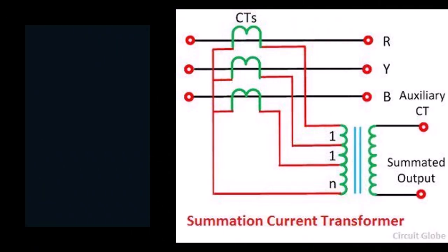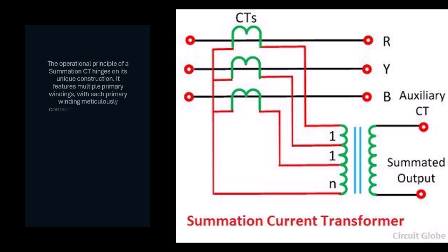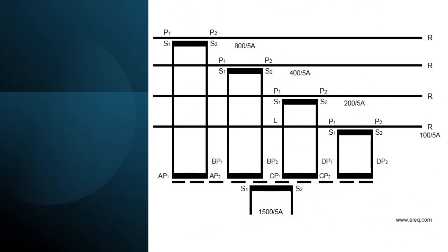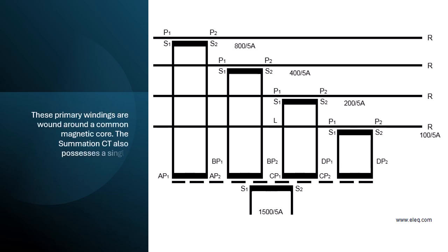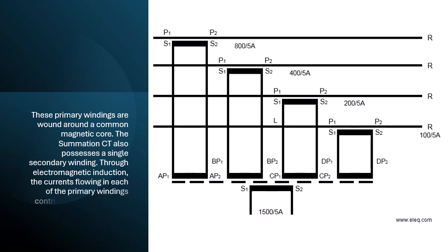The operational principle of a summation CT hinges on its unique construction. It features multiple primary windings, with each primary winding meticulously connected to the secondary output of a dedicated main CT monitoring a specific circuit or phase. These primary windings are wound around a common magnetic core.